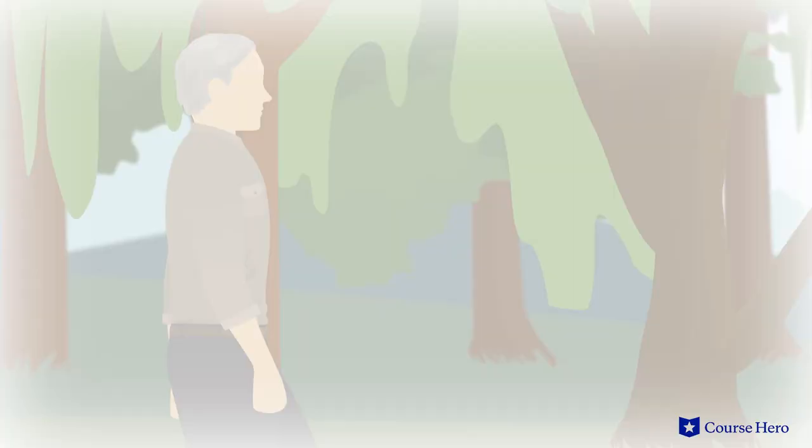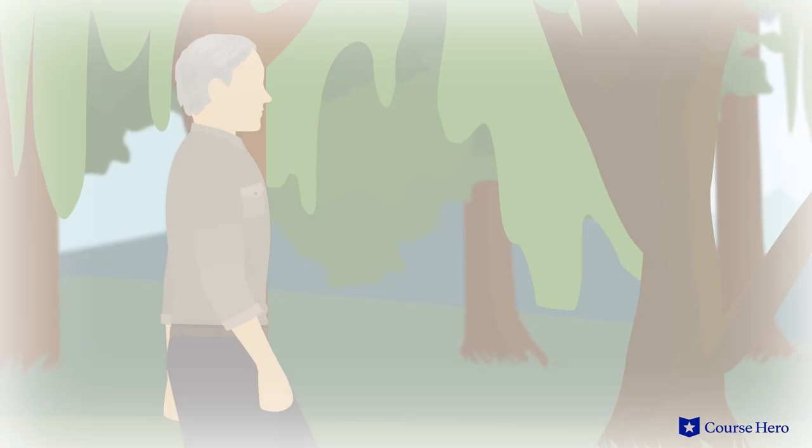Trees symbolize an everlasting life force that gives meaning to existence in the post-war chaos. Clarissa and Septimus are acutely aware of the temporary nature of their existence. They are comforted by the fact that nature, including trees, will outlive them.